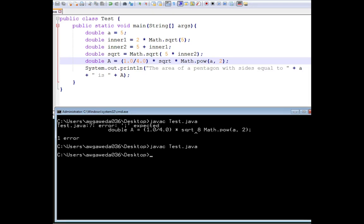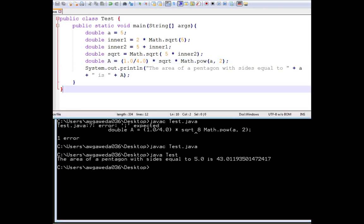And now we fire off the test. And the area of a pentagon, with sides equal to 5.0, is 43.019, yeah, big number, that thing. So, there we have it, the area of a pentagon in programming.